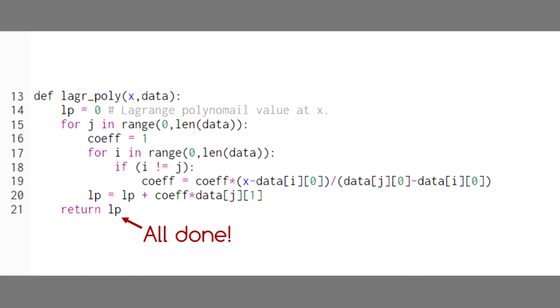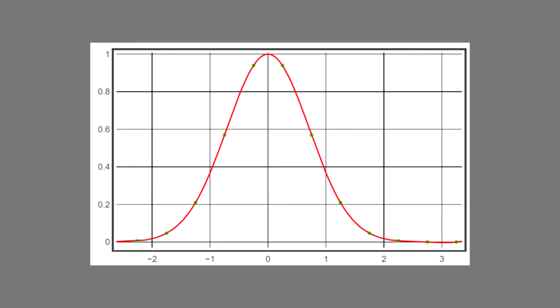Once our summation is finished, we return the value of the Lagrange polynomial at x. Here's the Lagrange polynomial fit for our data from last time, and it looks so much better. There aren't kinks at each data point and it produces the maximum fairly well. And you can see that the Lagrange polynomial is designed to pass through every data point exactly.